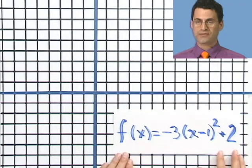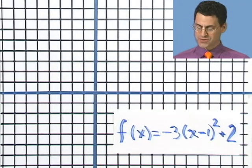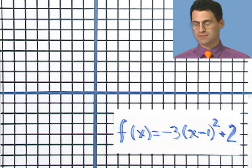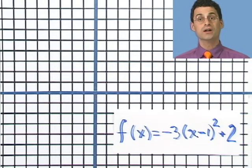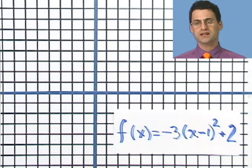Okay, now I want to pull all these ideas together and show you how you can really graph complicated functions using the techniques that we've just developed. Let's take a look at this function right here. I want to graph f of x equals minus 3 times the quantity x minus 1 all squared plus 2. Looks really, really threatening.